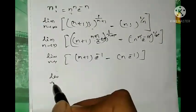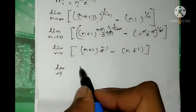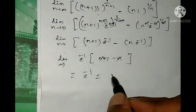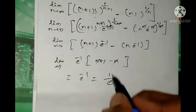Therefore, take e to the power of minus 1 common: (n+1) minus n. Then n and n get cancelled, we get e to the power of minus 1, that equals 1/e. This is the correct answer.